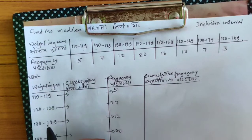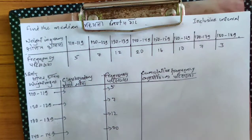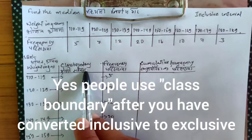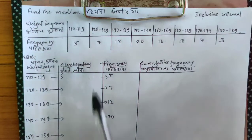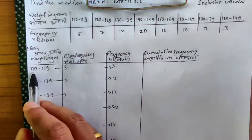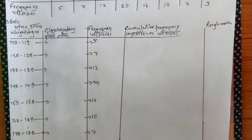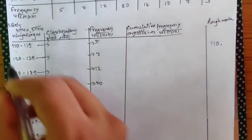Weight in grams. Now, whenever it is an inclusive interval, I use the word 'class boundary.' So here, don't be confused — whatever is written in the question, you write that thing. It was written 'weight in grams,' so I wrote 'weight in grams.' When converting this inclusive to exclusive, write 'class boundary.' From the lower limit we subtract 0.5; to the upper limit we add 0.5. So subtract 0.5 from 110. Let's show the rough work: 110 — the point is here, and we subtract 0.5.